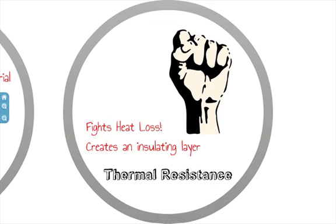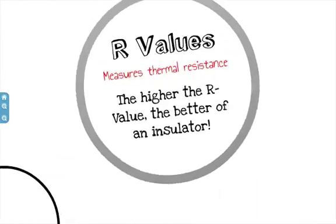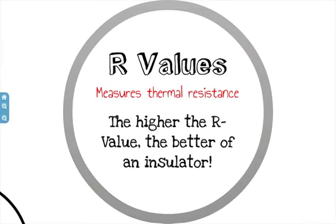Air is the best resistor to heat flow found in buildings. There are other types of things that will create thermal resistance as well, and we call those insulation. R-values measure the thermal resistance of a material — a unit of thermal resistance used for comparing insulating values of different materials. The higher the R-value of a material, the greater its insulating properties, and the slower the heat will flow through it.